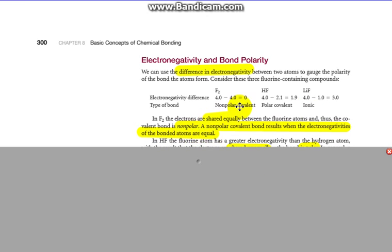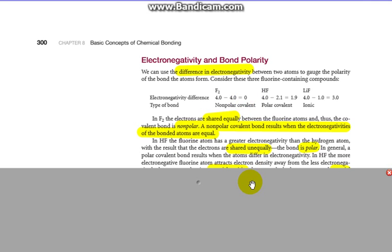In F2, the electrons are shared equally between the fluorine atoms, and thus the covalent bond is non-polar. A non-polar covalent bond results when the electronegativities are equal, so we don't get a number here. In HF, the fluorine atom has a greater electronegativity than hydrogen, which results in the electrons being shared unequally. So we say the bond is polar. In general, a more polar covalent bond results when the atoms differ in electronegativity.